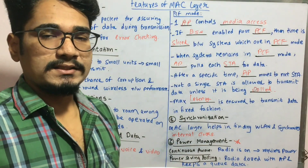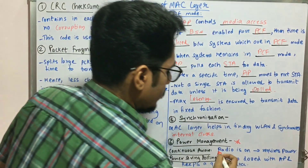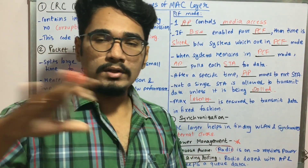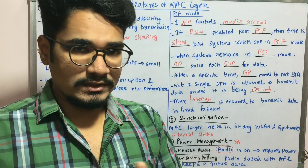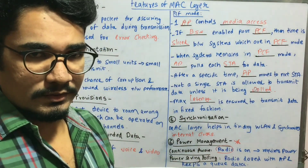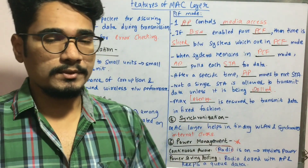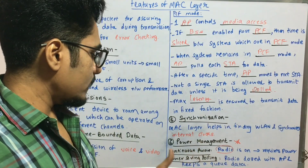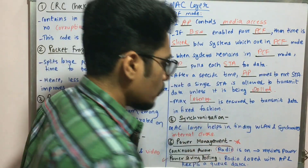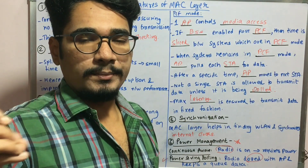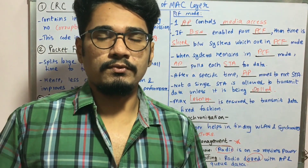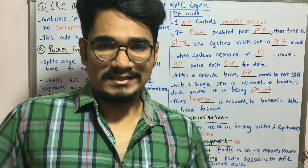Finally, we have the power management feature, which is a very essential feature in the MAC layer. It operates in two modes. The first is continuous aware mode, where the radio subsystem in the wireless system is kept on at all times — requiring power 24/7 — but this is less power efficient. The alternative is power-saving polling mode, which is the most efficient one. Here the radio station or radio system is dozed with the access point — meaning it sleeps for some milliseconds or minutes — and keeps a queue of data, pumping it out only when required.